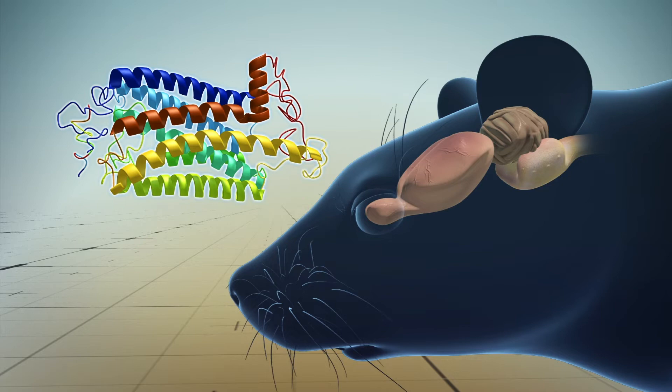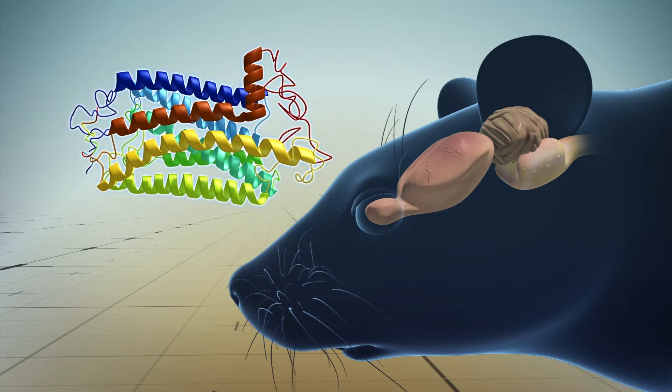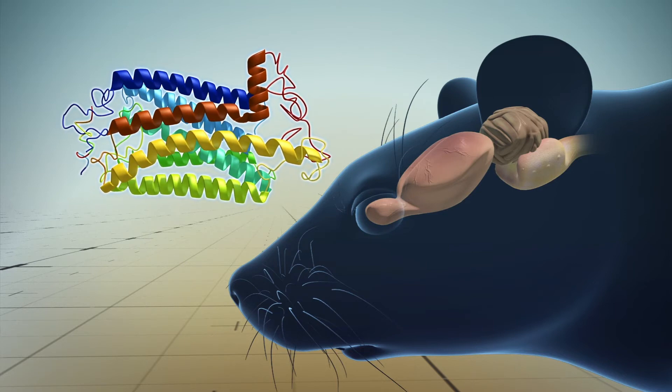The team then studied the itch-induced scratching behavior by observing the activity of a set of neurons that produce a neurotransmitter called tachykinin-1 or TAC1, which produces glutamate and neuropeptides.